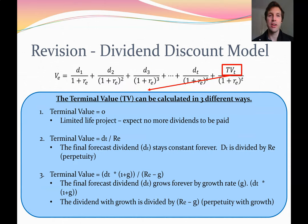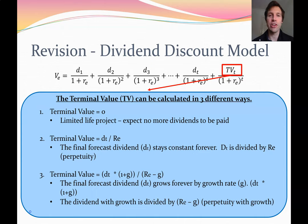The final thing to consider is the terminal value, and there are three different terminal value assumptions you can make. The first is that the terminal value equals zero, appropriate for a company with a limited life — for example, a mining company that has run out of gold and won't pay any more dividends. The second assumption is that the dividend stays constant forever: whatever dividend you forecast in your final year Dt, the company continues paying that same amount. That constant dividend is divided by RE, the cost of equity capital — this is a perpetuity calculation — noting you divide by RE, not one plus RE.